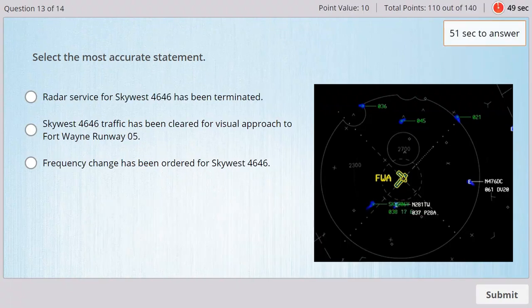Good afternoon, Skywest 4646, descending through 15,000 for 11,000. We have Golf. Skywest 4646, Fort Wayne approach. Fort Wayne altimeter is 30.16. Turn 10 degrees right, vector visual approach runway 5, Fort Wayne. 10 degrees right, for the visual runway 5, Skywest 4646.